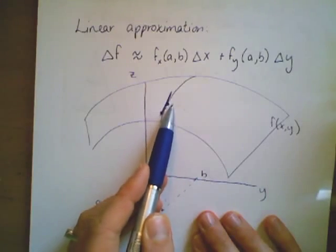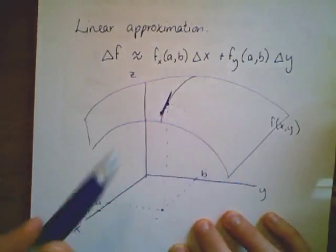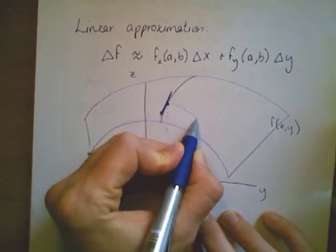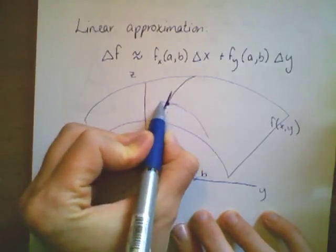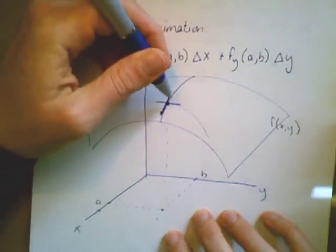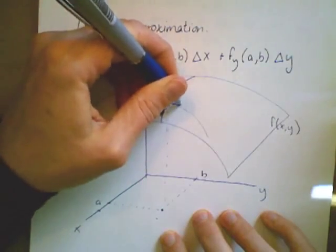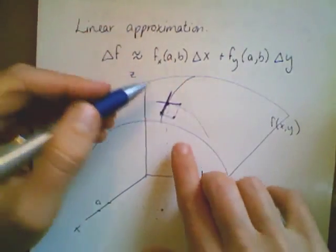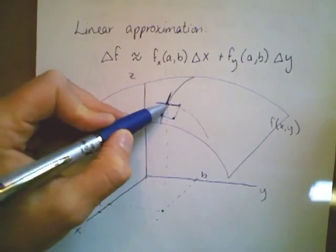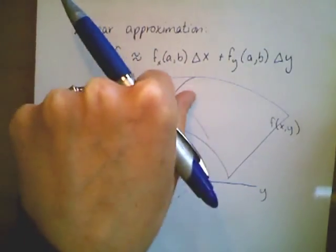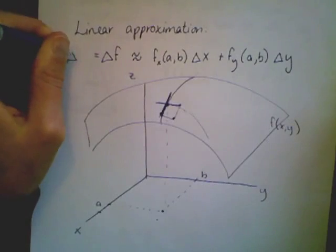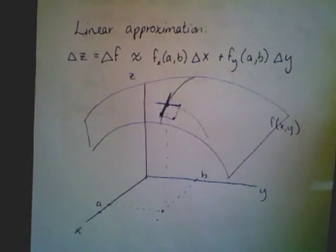Similarly, if I wanted to estimate my functional outputs, instead of going along the curvy surface, I could hold my x's constant at a, look at my partial derivative, the slope of this tangent line. If I march over some distance delta y, adding these two things together gives me some value in my z values. The sum of these two changes equals my change in z value, or change in f, my change in output.